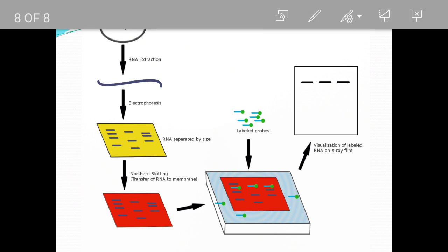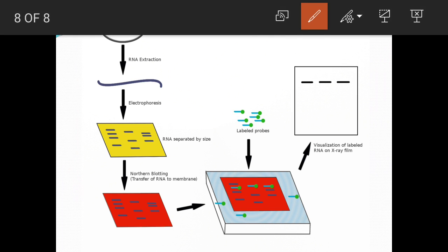Let's look at the diagram. First, RNA extraction, then electrophoresis on agarose gel. After that, the RNA molecules are transferred to the nylon membrane. The nylon membrane will be mixed with the probes. The probes are radiologically labeled. And finally, the visualization of labeled RNA on x-ray field.